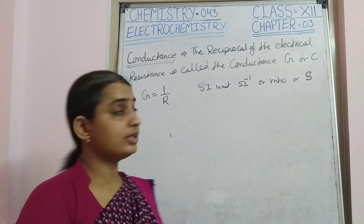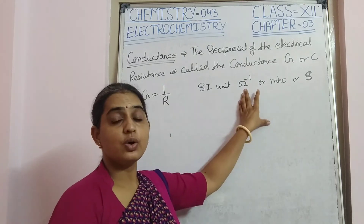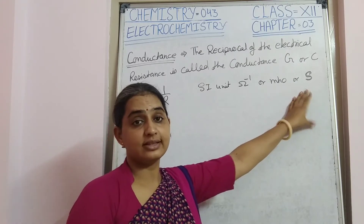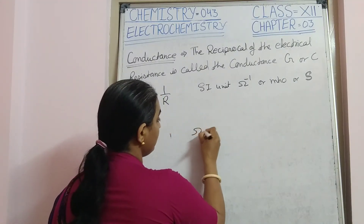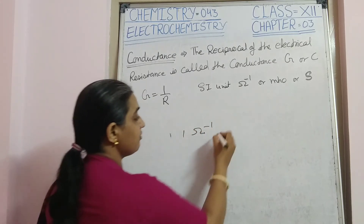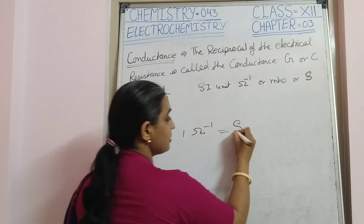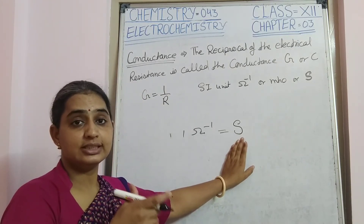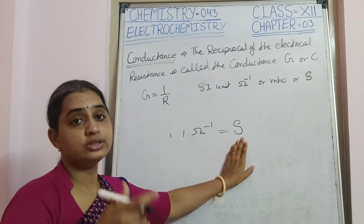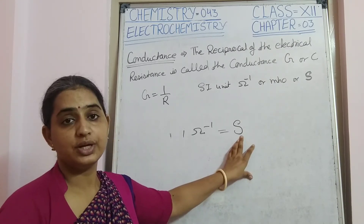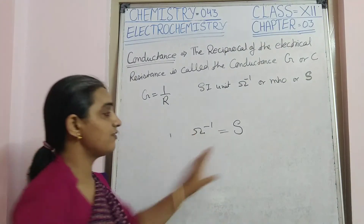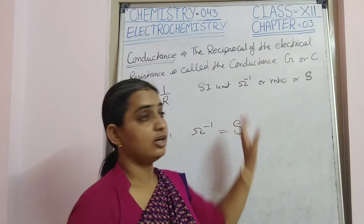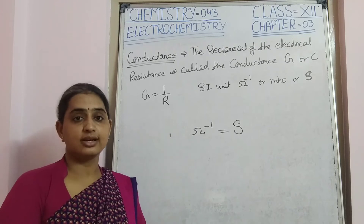The unit of conductance is ohm inverse, which can also be written as mho. One ohm inverse is called siemens — named after George Siemens (or Simon Ohm's full name includes Simon). So siemens is also a unit of conductance. You can write ohm inverse, siemens, or mho — all three forms are correct.